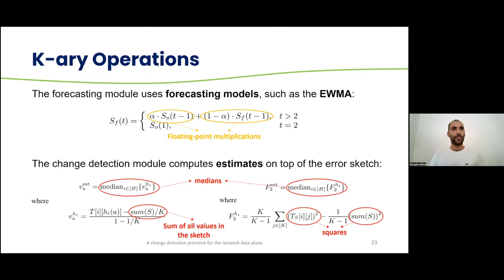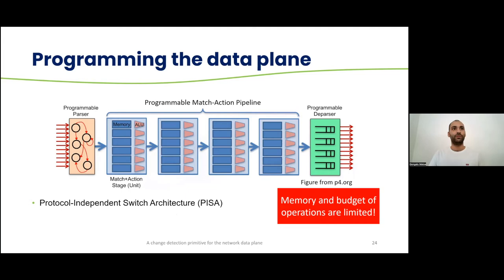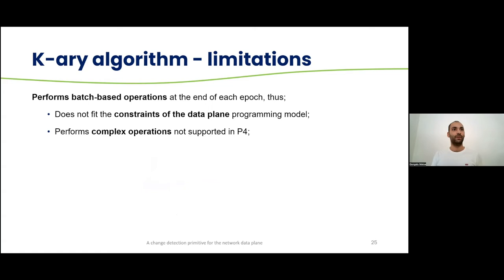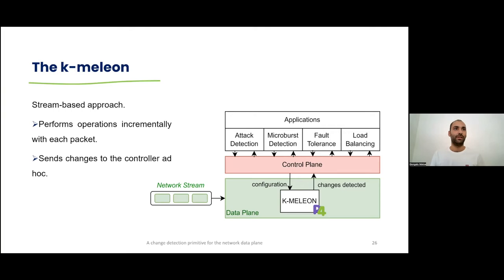We will be targeting the protocol independent switch architecture, PISA for short, which features a programmable parser, a programmable match action pipeline, and the programmable deparser. Within the programmable match action pipeline, we can perform some operations, but the memory and the budget of operations is very limited inside this pipeline. So we can already see that the K-Area algorithm has some limitations. The first, it does not fit the constraints of the data plane programming model, and the complex operations are not supported in P4, so we need to change it.